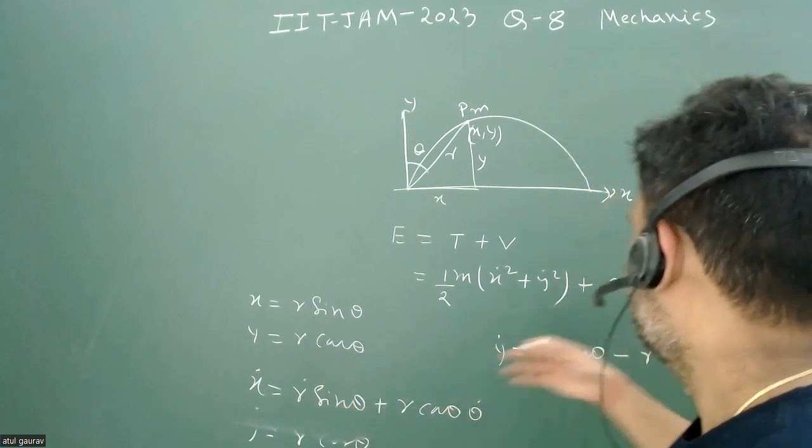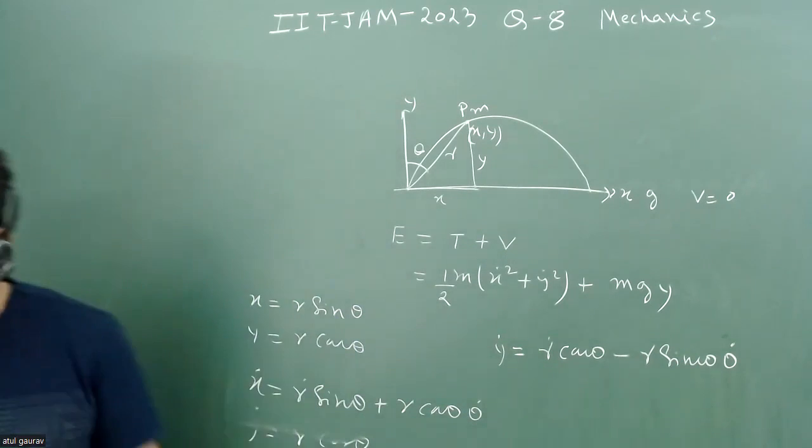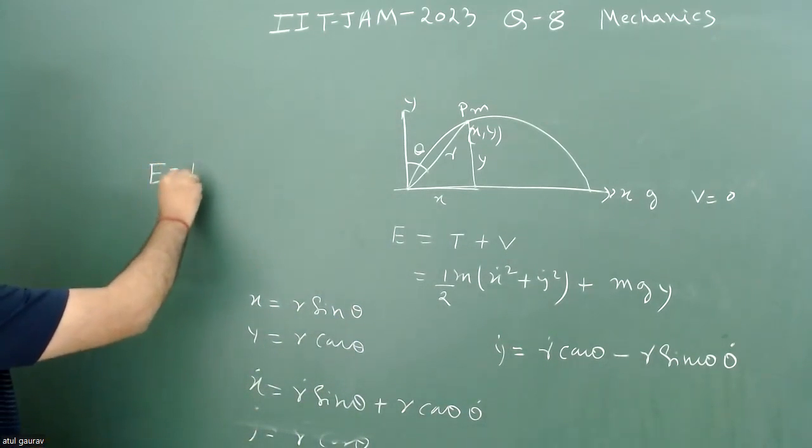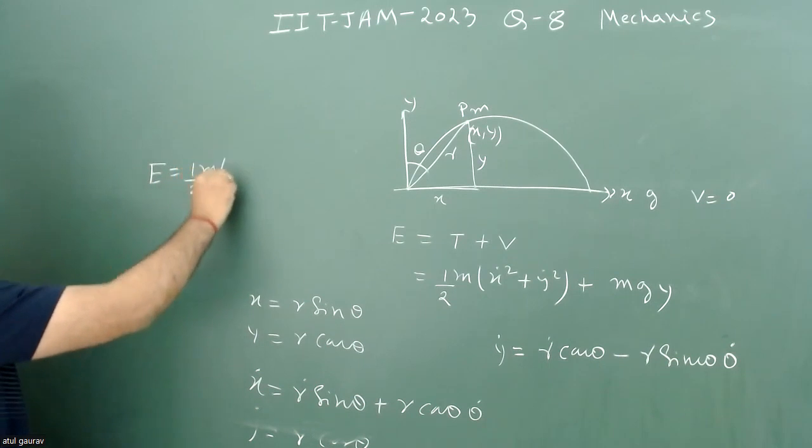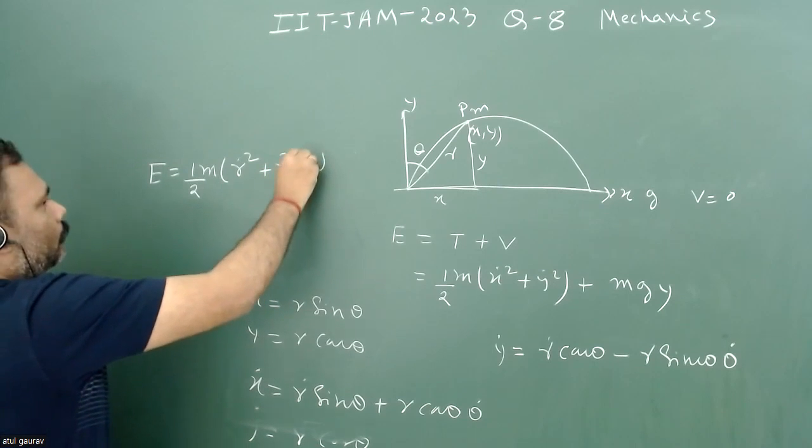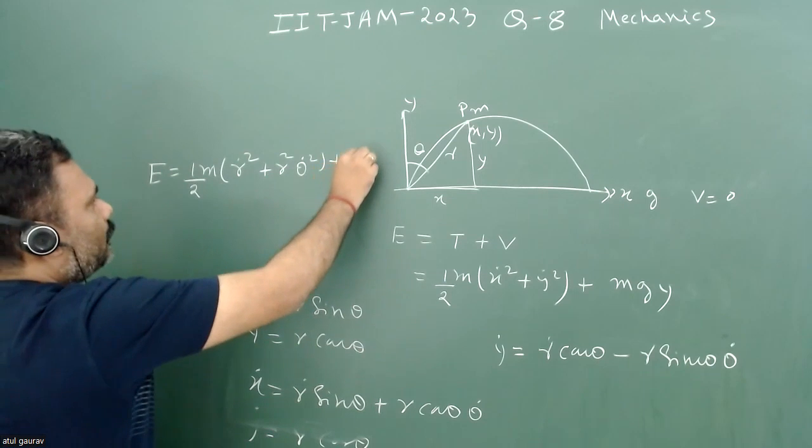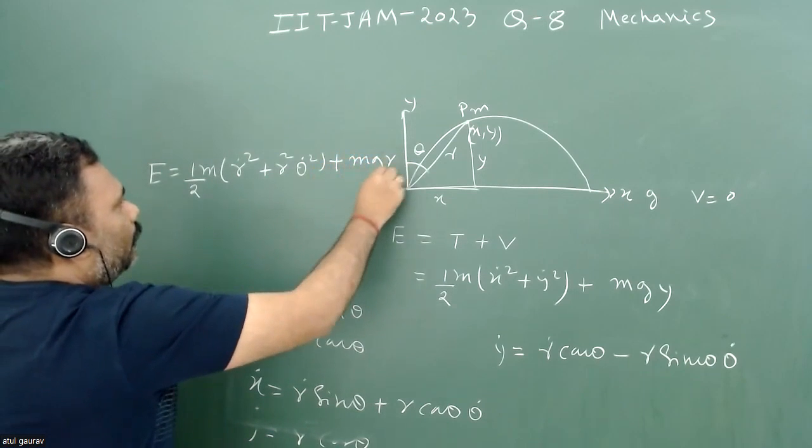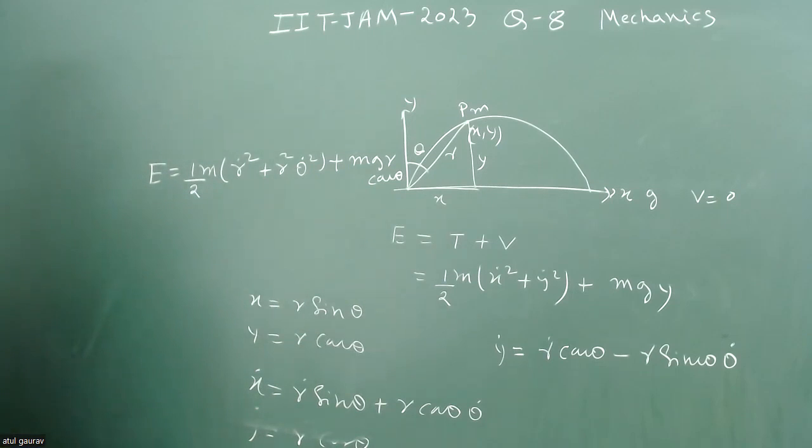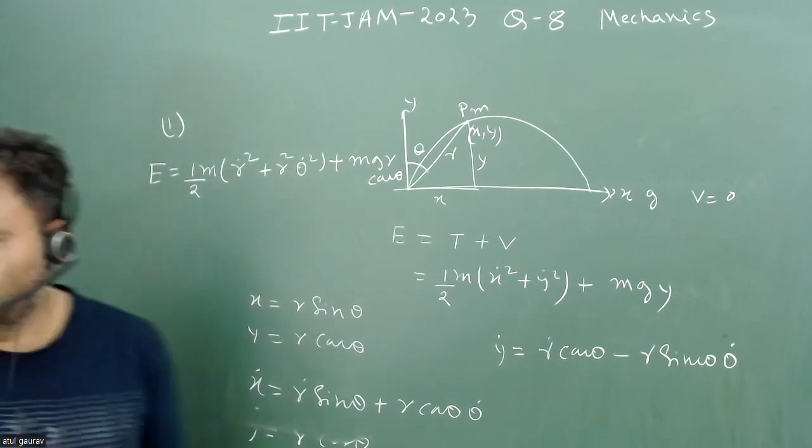And once we go for X dot square plus Y dot square, then I can go for total energy of the system. The total energy of the system is equal to half M times R dot square plus R square theta dot square, and Y is nothing but R cos theta. That will be plus MGR cos theta. So this will be my energy. And I think option one is correct in this form.